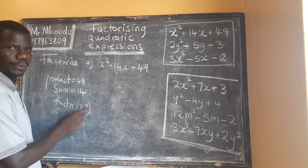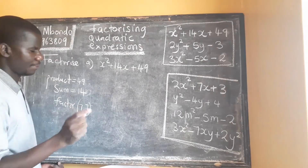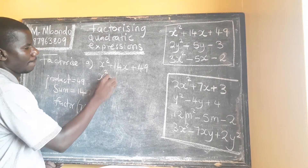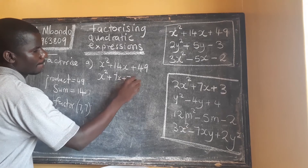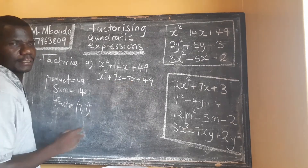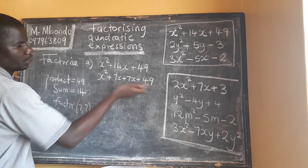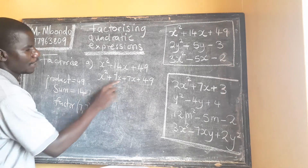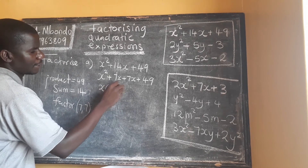We use the factors to expand the sum. So we replace 14x with 7x plus 7x. Then at this point we factorize this expression using the grouping method. We look at what is common in the first two terms — what is common is x — giving us x(x + 7).